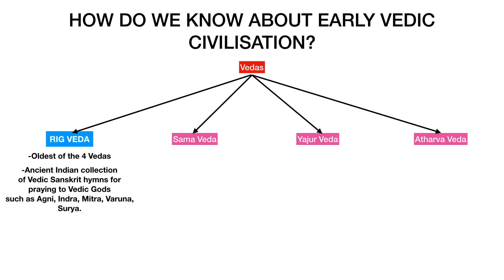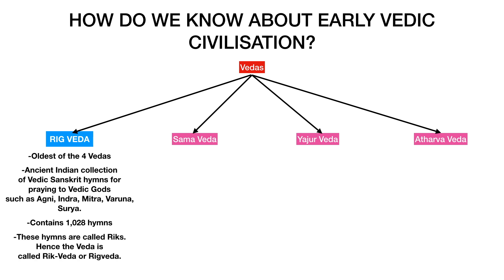Rig Veda contains Sanskrit hymns praying to gods like Agni, Indra, Mitra, Surya, etc. There are 1028 hymns present in the Rig Veda. These hymns are also called Riks. From this word, this part of the Vedas was called Rig Veda.